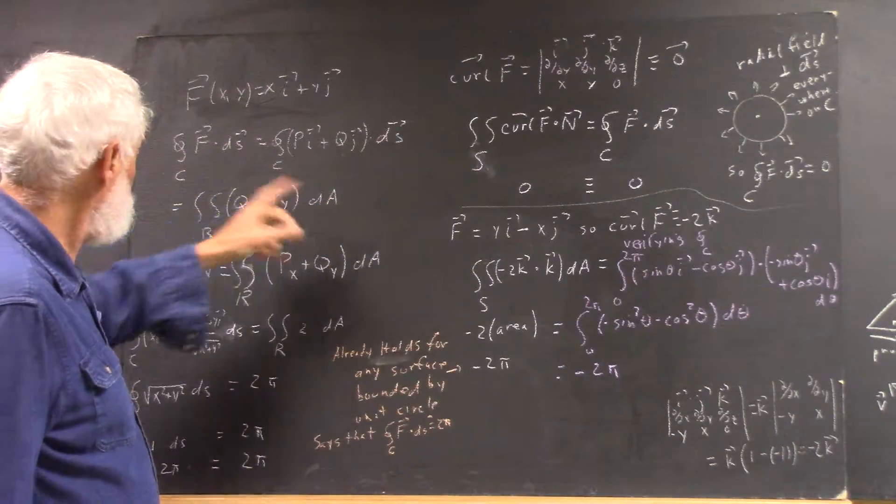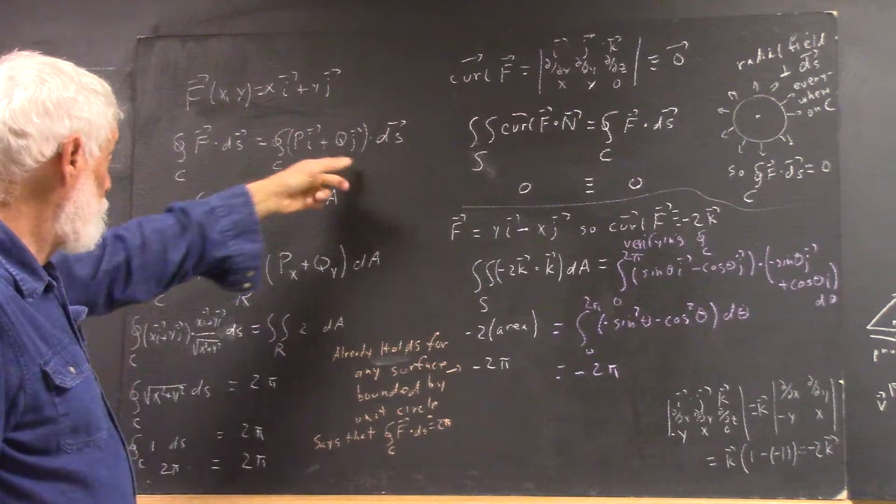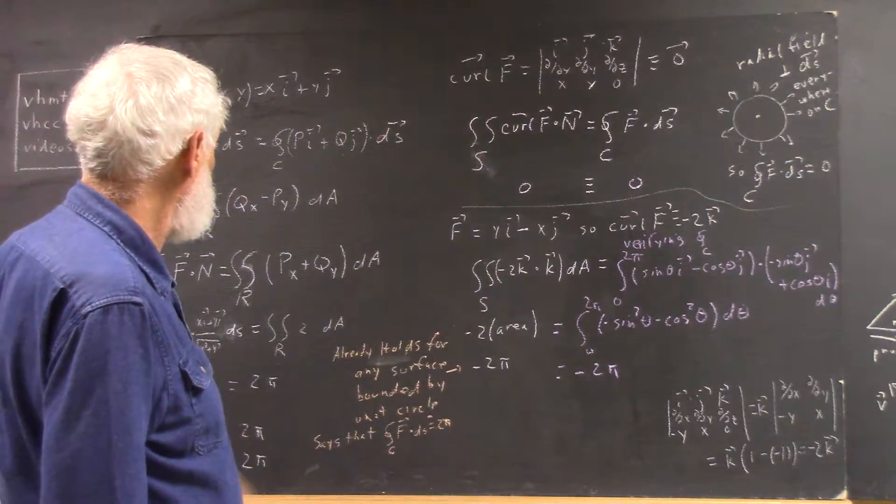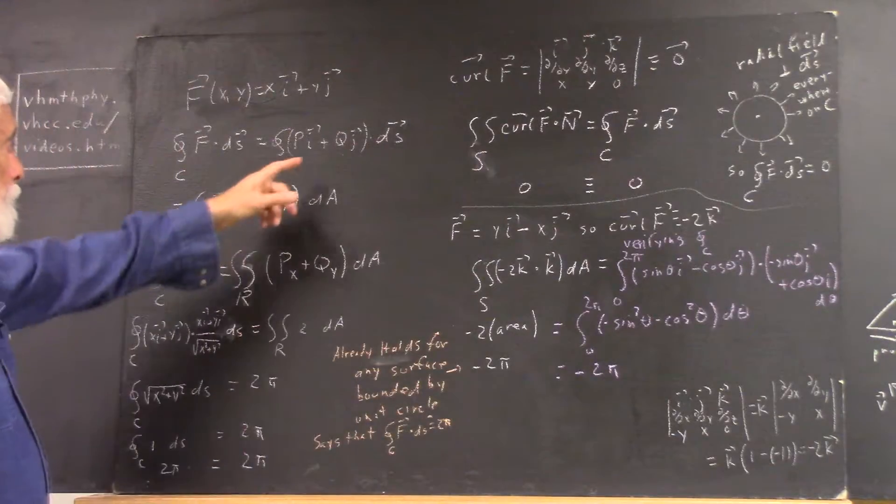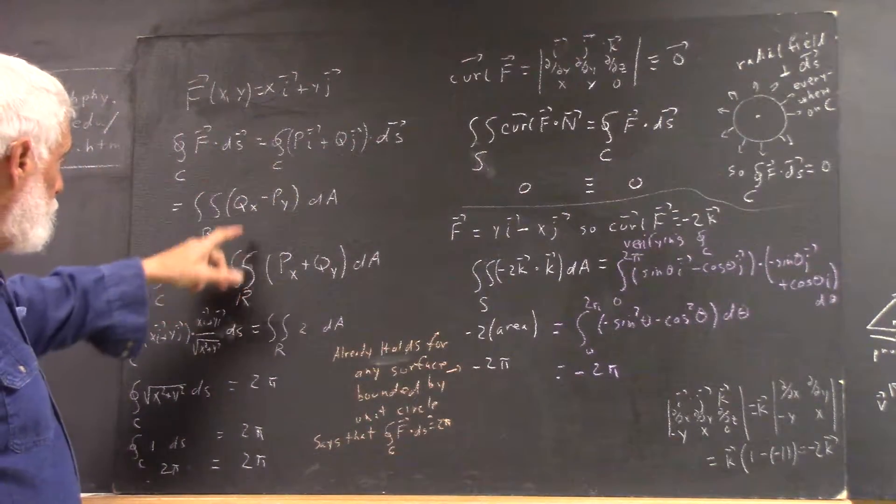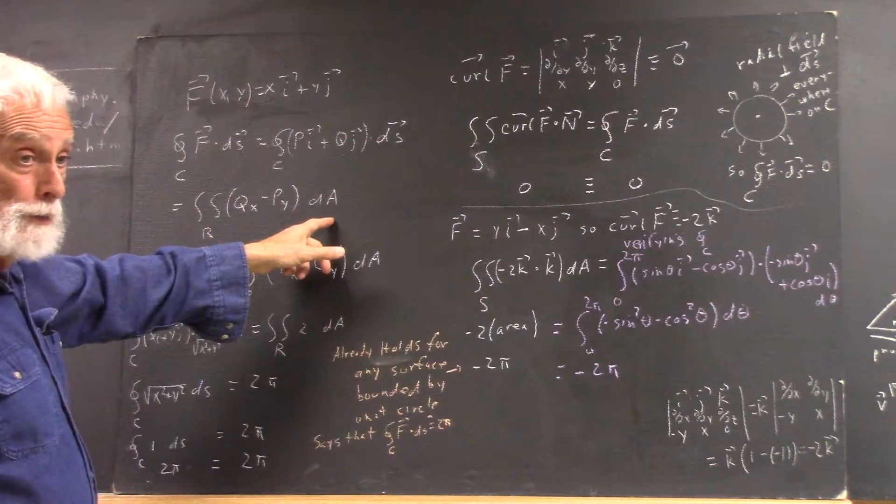f is pi plus qj for a function of two variables, and that's dotted with ds. By Green's theorem, this should equal the integral over the interior of the boundary of qx minus py with respect to a.